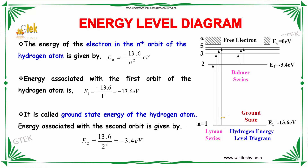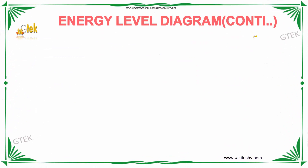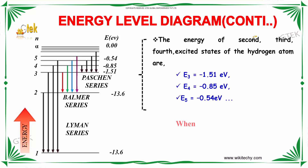For the second orbit, the energy is minus 3.4 eV. This is the hydrogen energy level diagram. As indicated, the energies of the second, third, and fourth excited states of the hydrogen atom are given for each level.